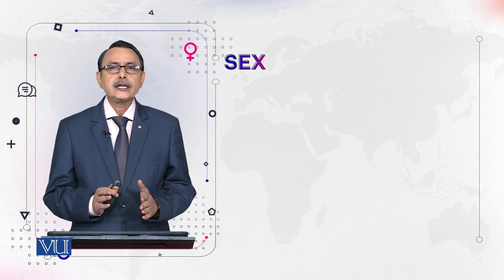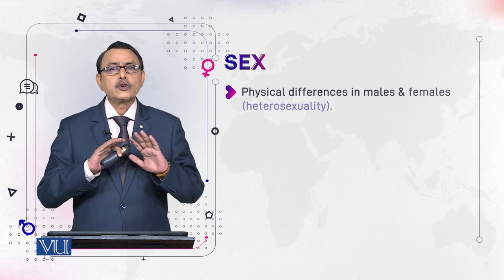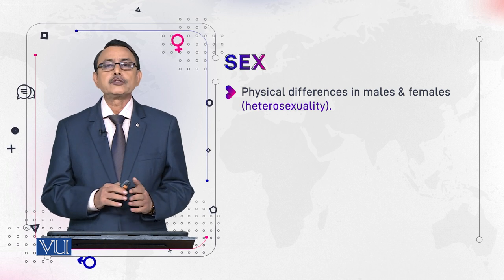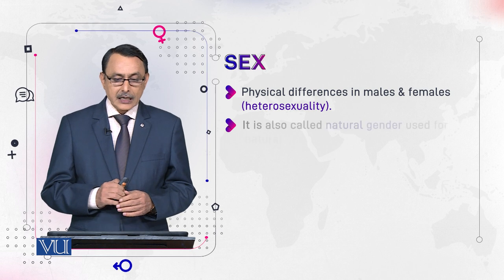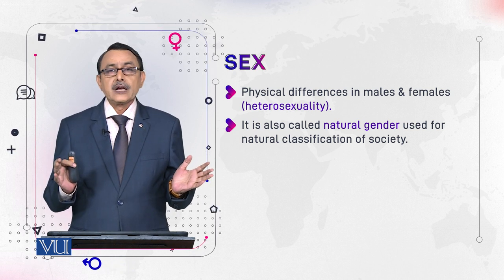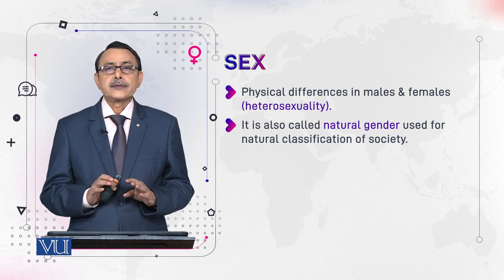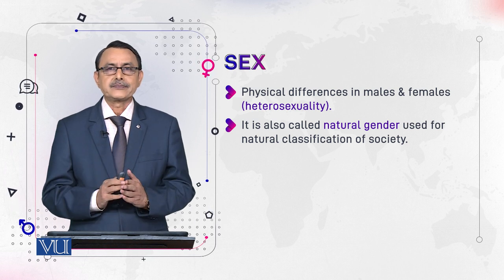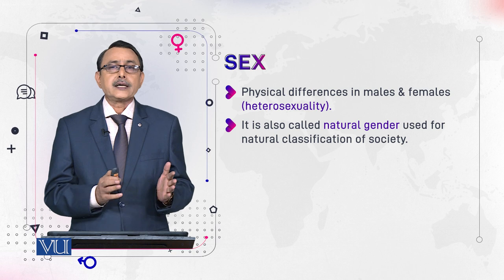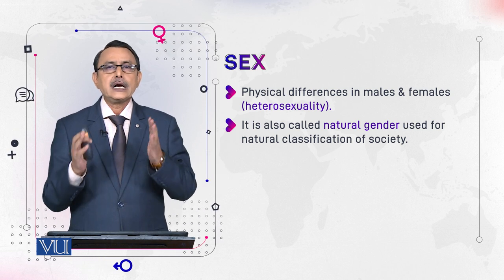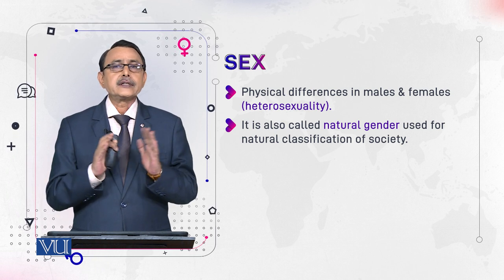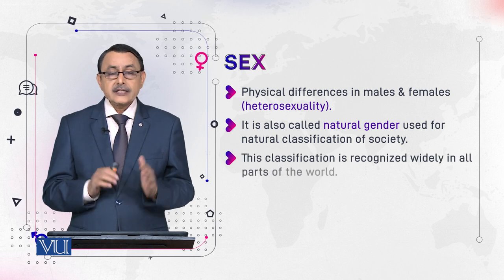First of all, sex. In this course, sex stands for our biology — our biological sex. We are born as male and female. This is also called natural gender. Natural gender is usually used to organize society — society is organized into males and females.